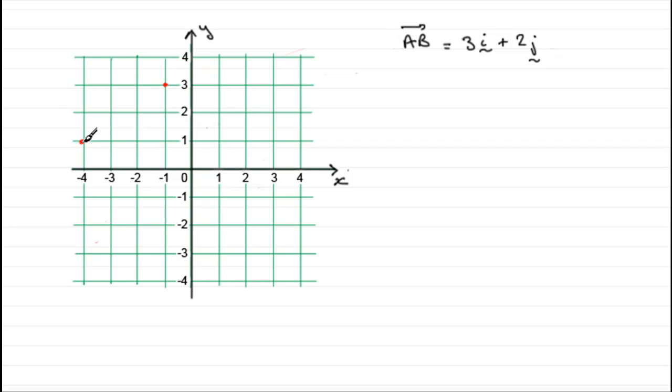So B relative to A, let's just mark them on, would be in these two positions. And the vector A to B would be that one, 3i plus 2j. But as I say, I don't know where A or B could be. They could be absolutely anywhere on here. The relative position of B to A is always going to be 3i plus 2j. Well, let's just put this displacement vector here.